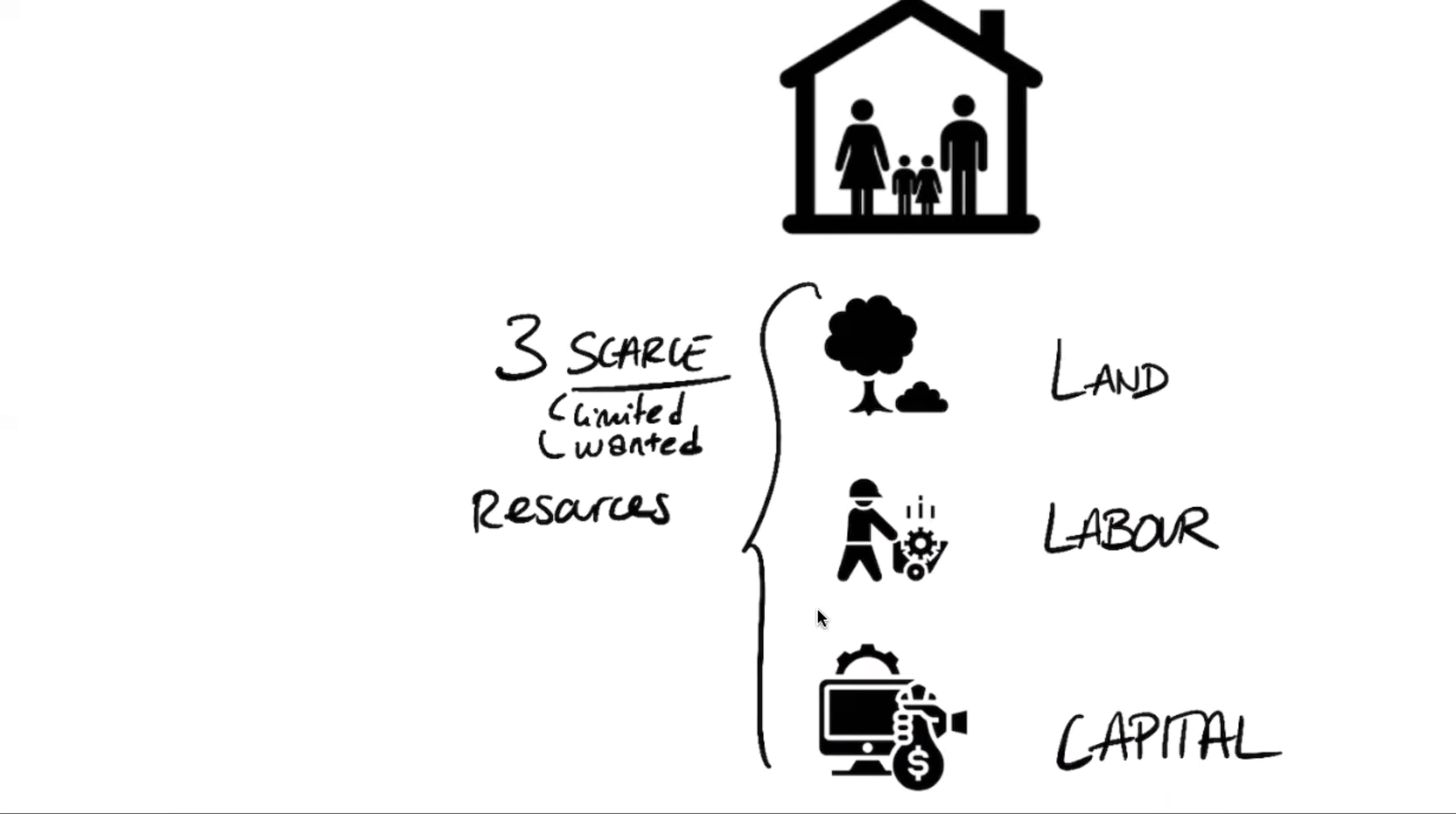And so they possess first land. Basically that's privately owned land that they rent or they sell to firms. Then they have labor. Labor is basically the people with their skills, their knowledge, and of course the effort they dedicate into working for firms. And finally, they also possess capital. It is indirect capital because basically through their savings, through the money they put in the bank, the firms are able to invest using that money. That's how the market works.